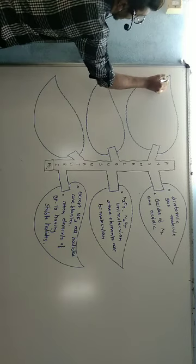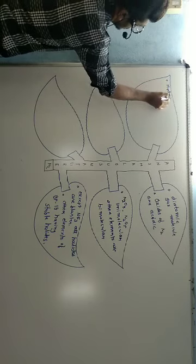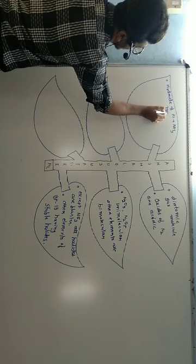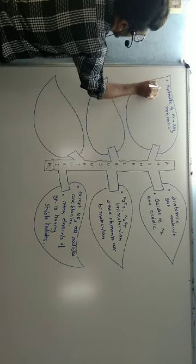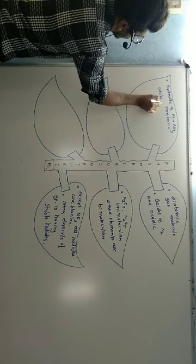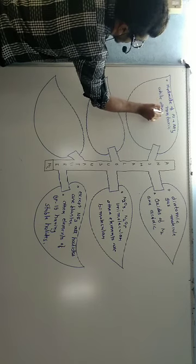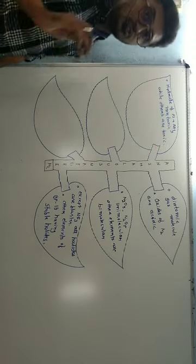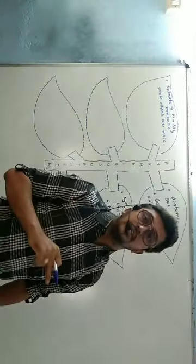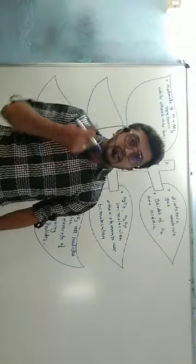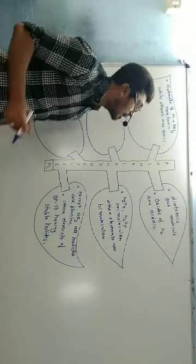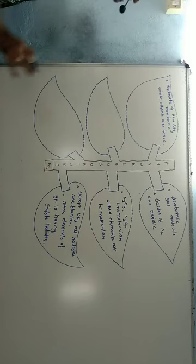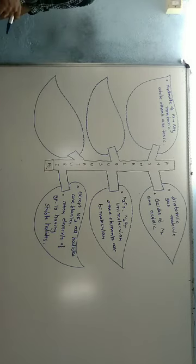Moving on, the hydride of nitrogen, such as NH3, is non-toxic, while the hydrides of the other group 15 elements are toxic. For example, phosphine PH3 is toxic, but NH3 is a non-toxic hydride. This is again an important point about toxicity, which represents another anomalous behavior of dinitrogen compared to the same group.